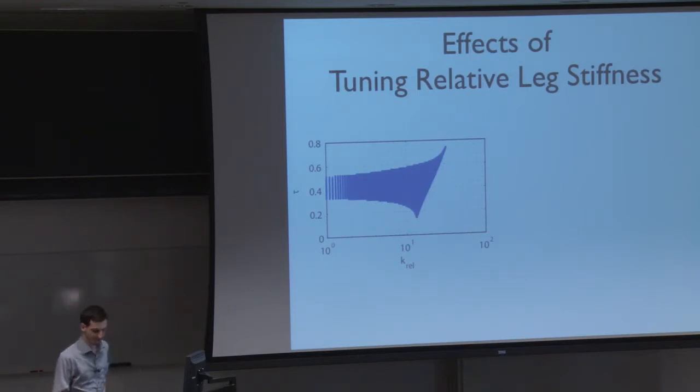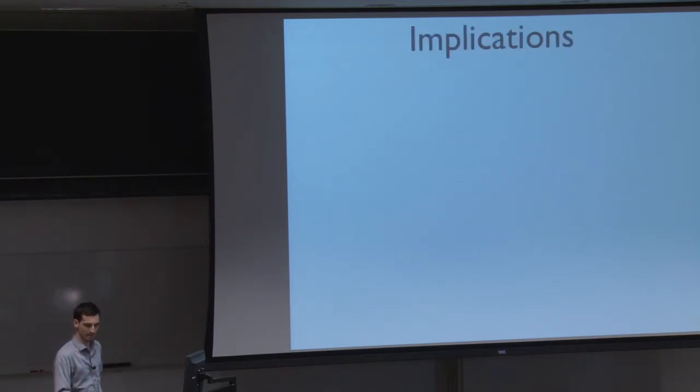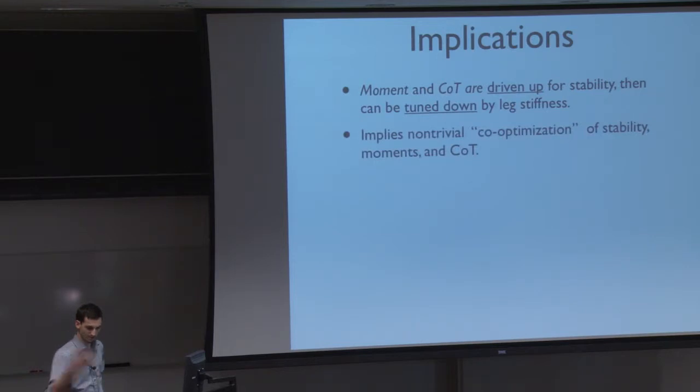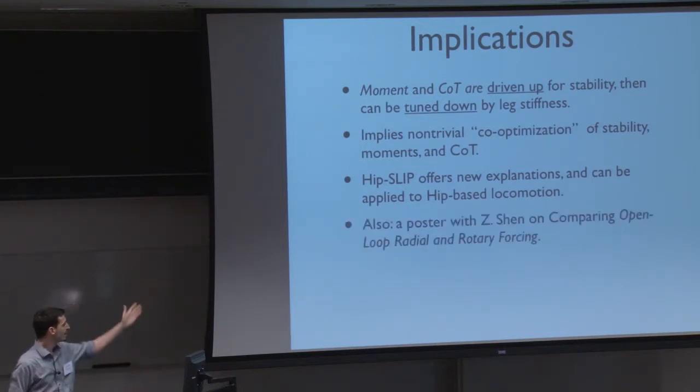And this is my last slide of results, so I can wrap up. So here it's showing now, once we're above that threshold, we have stable locomotion, I'm plotting all those stable solutions as blue dots. Now if we tune the relative stiffness, where, what does that do? And basically the main result is that we get a minimum in torque, and we get a minimum in cost of transport, which is very close to what we see where all these animals and even some of the robots like to run. And I don't have time for the implications, but the cost of transport and moment get driven up by, in order to get stability, but can be tuned down by leg stiffness. This is a non-trivial kind of co-optimization. And these new models such as hip SLIP can offer these new explanations, as well as maybe doing new kinds of robots. And that's it. There's another poster on comparing radial and rotary forcing. Thank you very much.